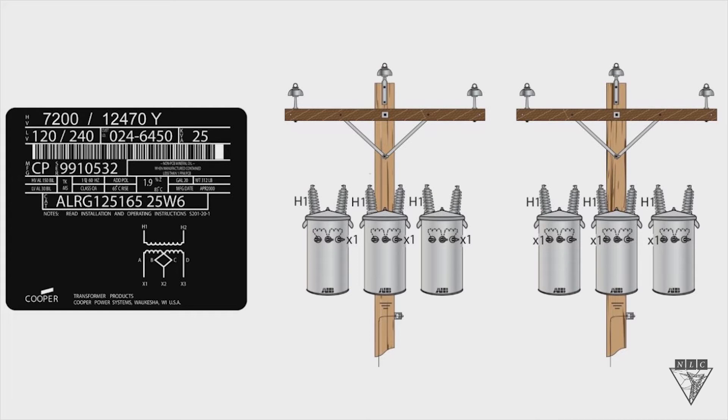First you need a work order or construction print that shows you the circuit voltage on the system and the service voltage needed and what size transformers needed. Up in the left hand corner, we're going to write a work order out here and say that the circuit voltage is 7200/12470.